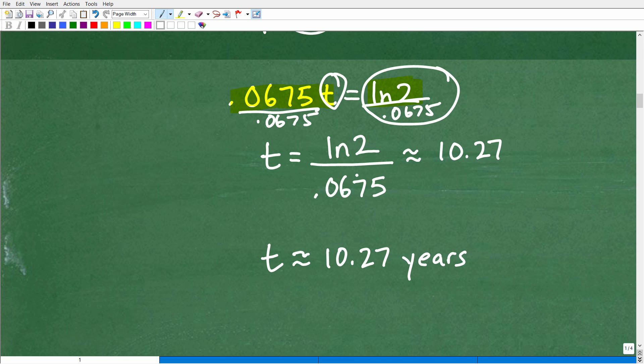And when you put this into your calculator, you're going to get approximately 10.27, okay, that's what T is equal to. But remember, T is in years. So 10.27 years is how long it's going to take to get that $500 to $1,000 at 6.75% interest rate compounded continuously.